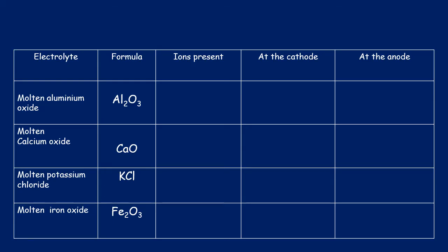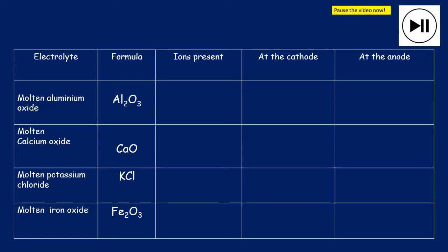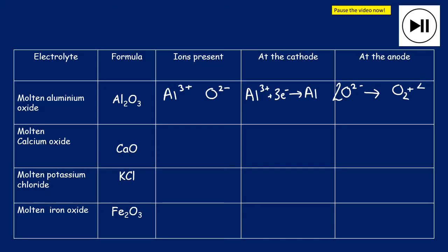Now have a go at some examples yourself — pause the video. For the first one (molten aluminium oxide): ions present are Al³⁺ and O²⁻. At the cathode, aluminium ions gain three electrons: Al³⁺ + 3e⁻ → Al. Aluminium metal is discharged, most likely as a liquid. At the anode, oxide ions form oxygen: 2O²⁻ → O₂ + 4e⁻. Oxygen gas is formed at the anode.